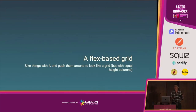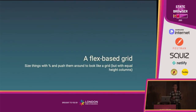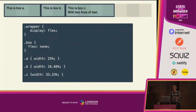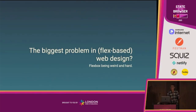Then Flexbox came along and basically solved all our problems with floats. It allowed us to create a grid with equal-height columns, and we didn't have to worry about clearing. But because it solved those problems so well, no one actually looked at what Flexbox was supposed to be for. Everyone just said it's floats-plus. Bootstrap rebuilt their grid system using Flex. But a Flexbox-based grid is just like a float-based grid — you size things in percentages and push them around.